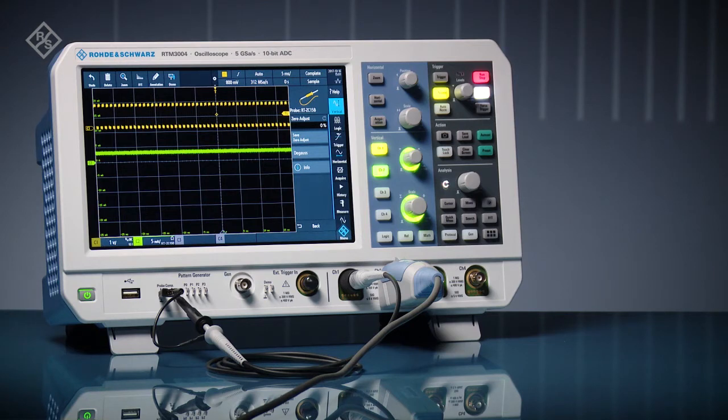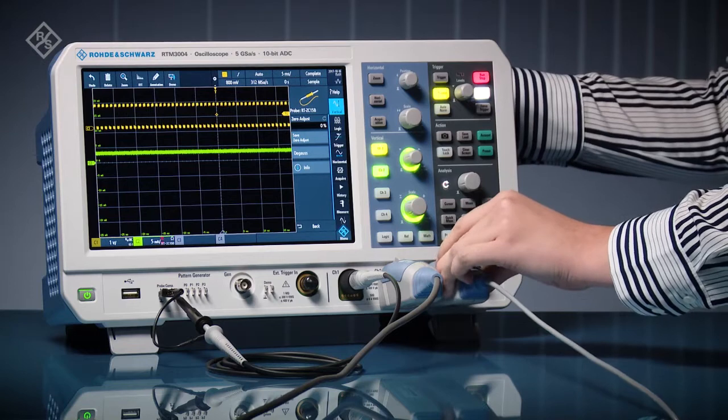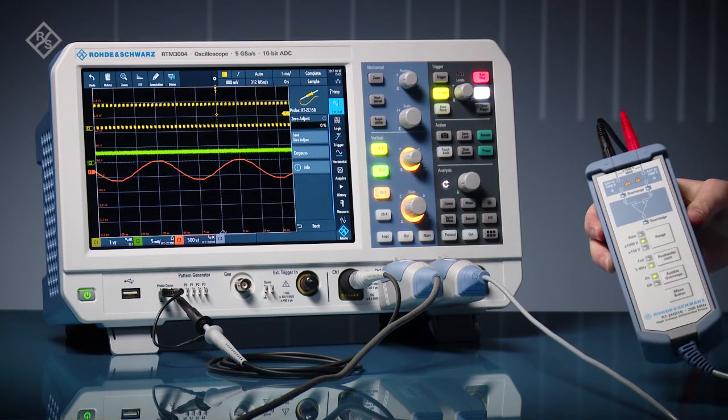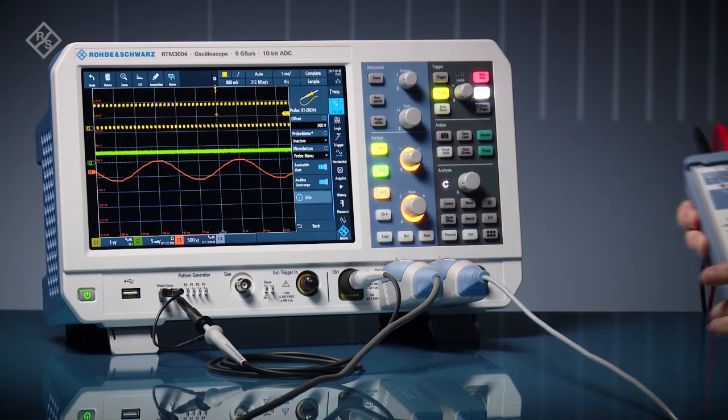Choose from a wide range of voltage probes. The scope knows if it's single-ended, differential, or in this case a high-voltage differential probe. Quickly access available features. One example is the configurable micro button on the probe.